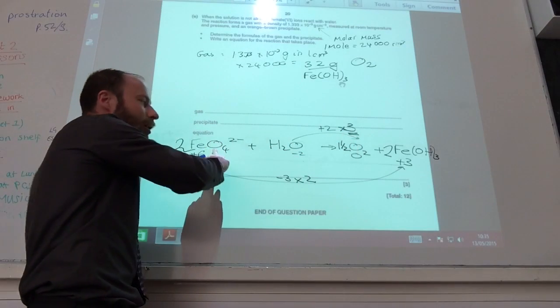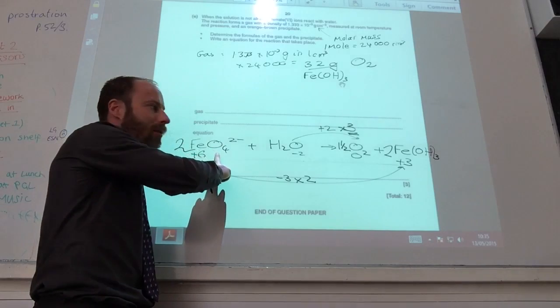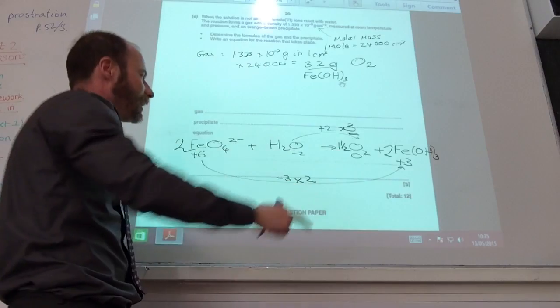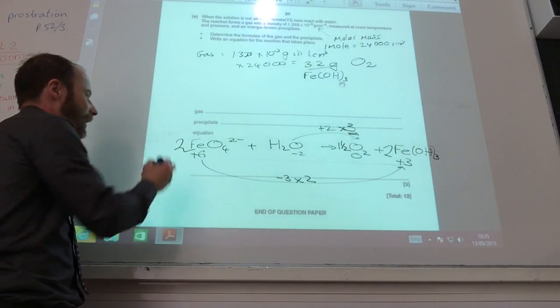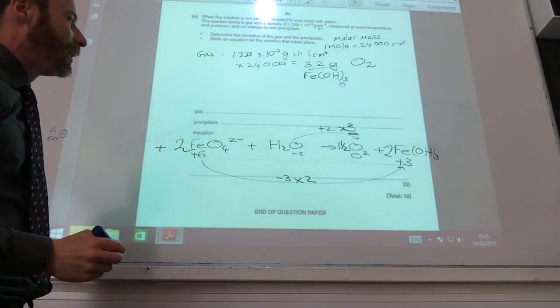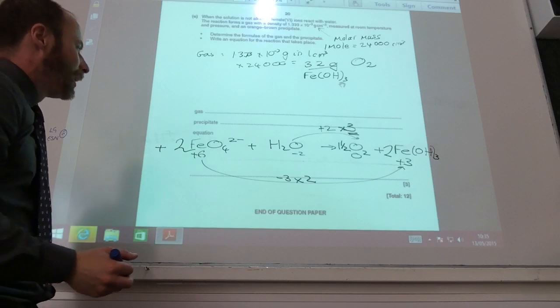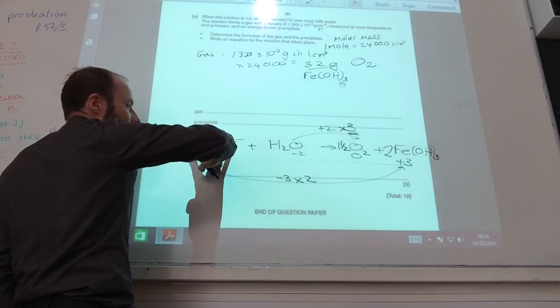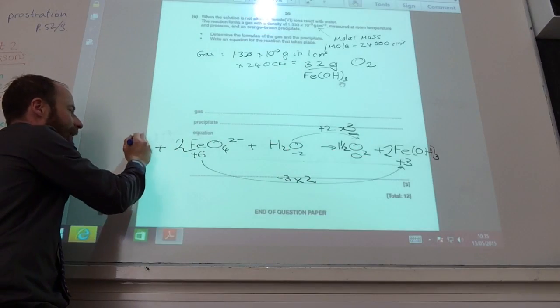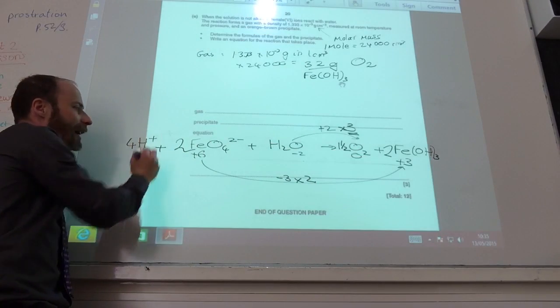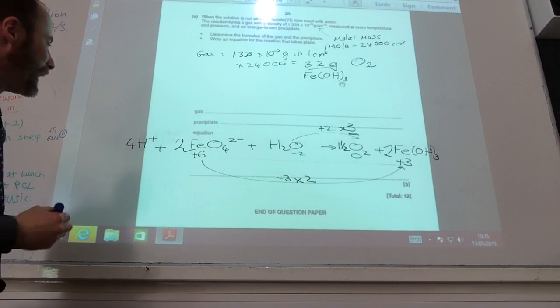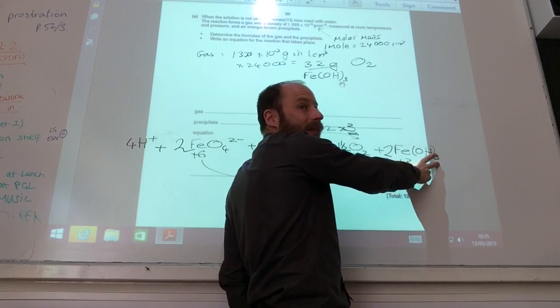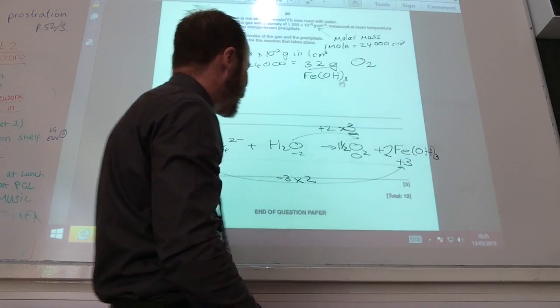But those oxygens could have come from here as well because they've changed. So I need a total of one and a half oxygens there. The final thing I need to do is to balance this up. I've got four minuses there. I've got no minuses there. So I can balance this up by adding four H+ there. And that will mean four H+ plus two hydrogens here works out to give me my six hydrogens that side as well.